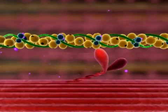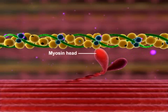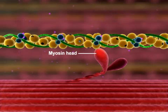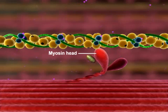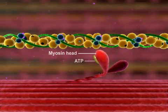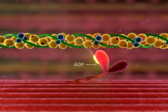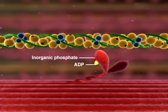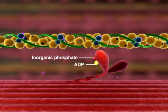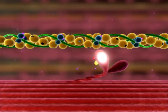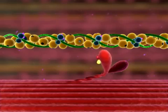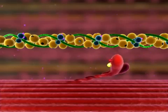The myosin head must be activated before a crossbridge cycle can begin. This occurs when ATP binds to the myosin head and is hydrolyzed to ADP and inorganic phosphate. The energy liberated from the hydrolysis of ATP activates the myosin head, forcing it into the cocked position.